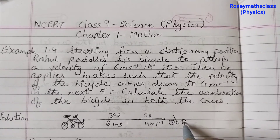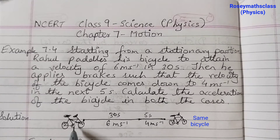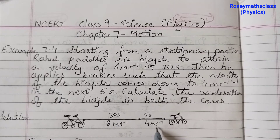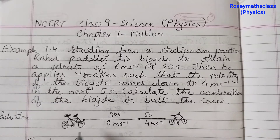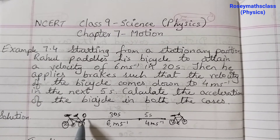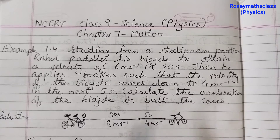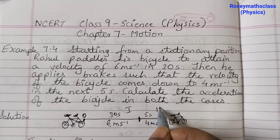The same bicycle first moves with a velocity of 6 meters per second in the first interval of time, and then 4 meters per second in the next interval. Here the initial velocity is zero because the bicycle is at a stationary position. Now we will see the two cases to calculate the acceleration. Case one is from the start to the point where brakes are applied, and case two is from there to the final position.